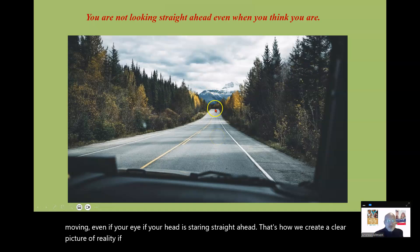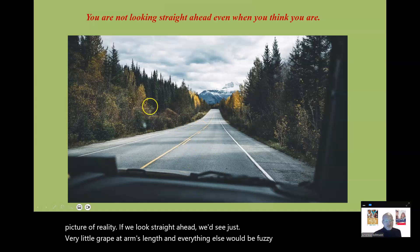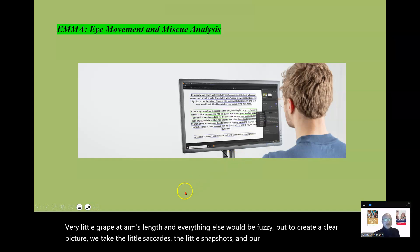That's how we create a clear picture of reality. If we look straight ahead, we'd see just a very little grape at arm's length, and everything else would be fuzzy. But to create a clear picture, we take the little saccades, the little snapshots, and our brain is filling in the blanks.